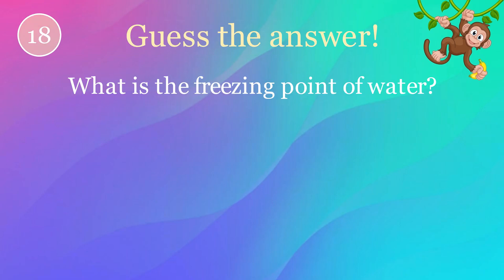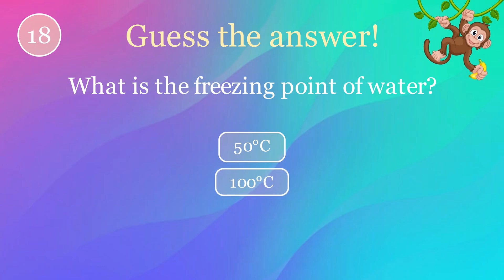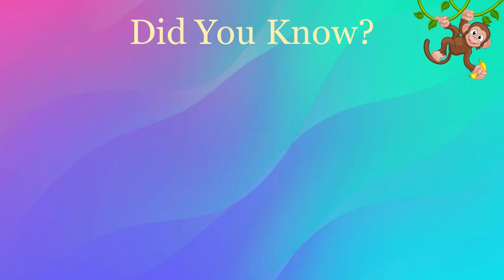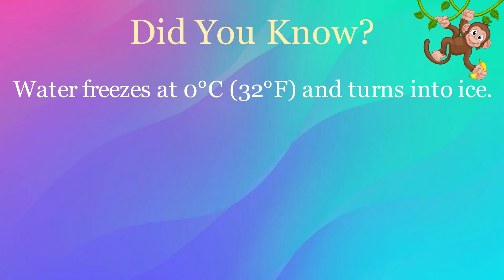What is the freezing point of water? Options: 50 degrees Celsius, 100 degrees Celsius, 0 degrees Celsius. The correct answer is 0 degrees Celsius. Here's an interesting fact: water freezes at 0 degrees Celsius (32 degrees Fahrenheit) and turns into ice.